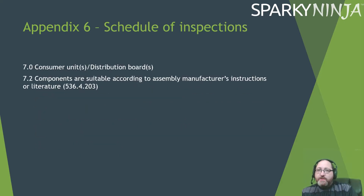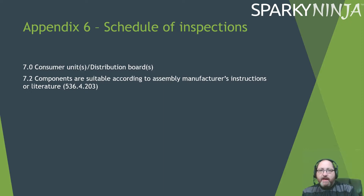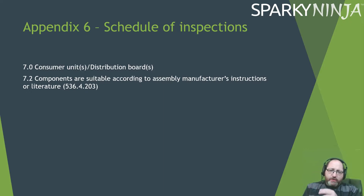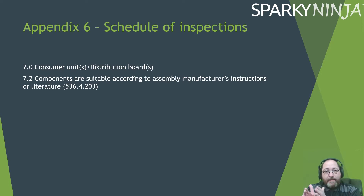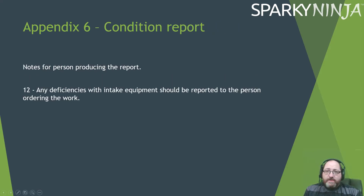There's also information added on the consumer's distribution board for the schedule of inspections. Components are to be confirmed as suitable according to the assembly manufacturer's instructions — referring to assembly manufacturing instructions regarding short-circuit protection and coordination. There's also a regulation about having everything in the assembly or panel from the same manufacturer, so that's something else we have to verify on our schedule of inspections.